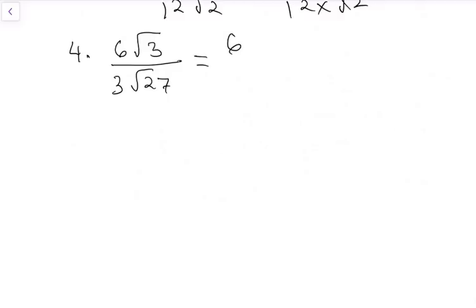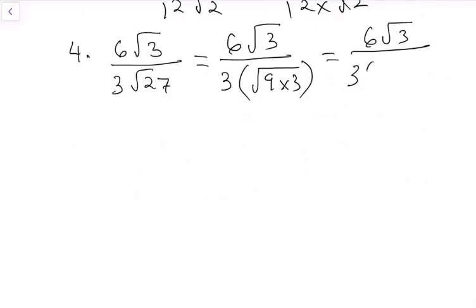We are going to break it down. We have 6 root 3 and 3 outside the brackets, and we look for the factor of 27. What can multiply each other? From the beginning, we know it to be 9 times 3.